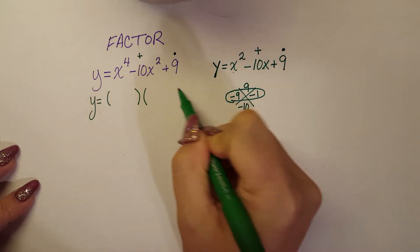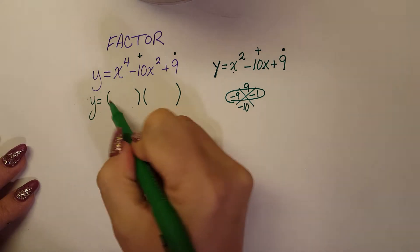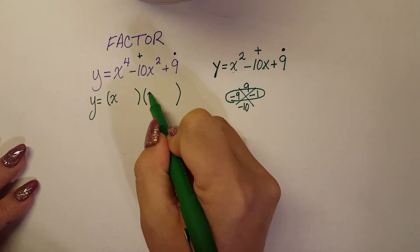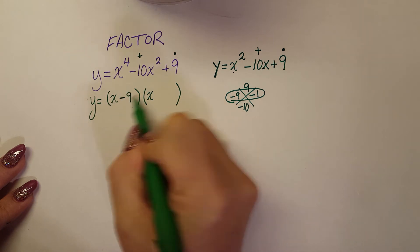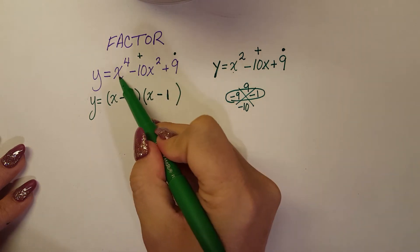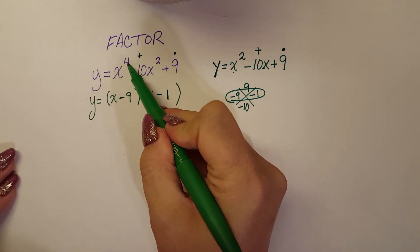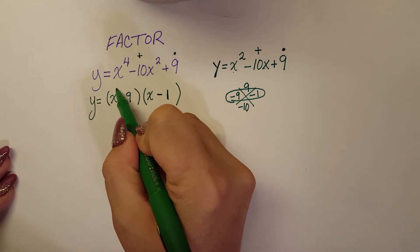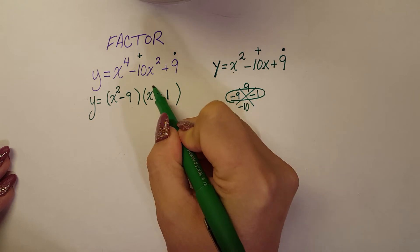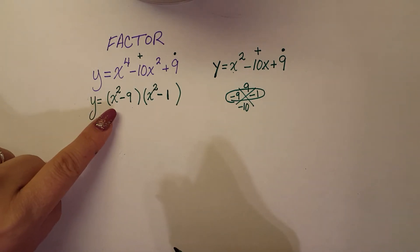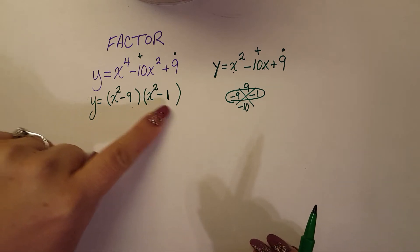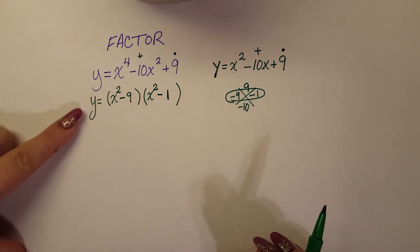In this case, we're going to have x and x, and we know it factors to negative 9 and negative 1. But because we have a quartic, that means this is going to be x squared and x squared. So our factors so far is x squared minus 9 and x squared minus 1.